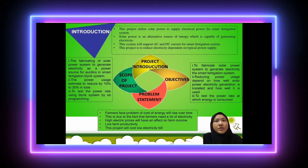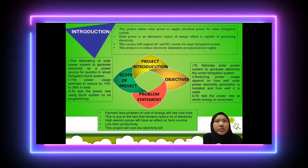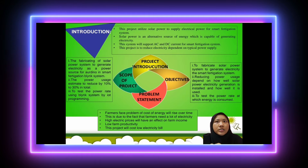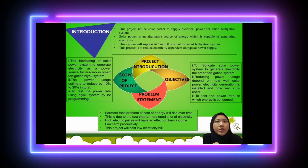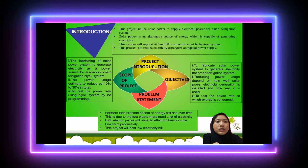We begin with the project introduction. This project utilizes solar power to supply electrical power for a smart fertigation system. Solar power is an alternative source of energy capable of generating electricity. This system will support AC and DC current for the smart fertigation system, and aims to reduce electricity dependence on a typical power supply.